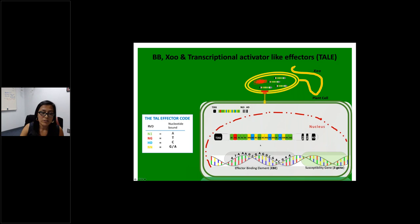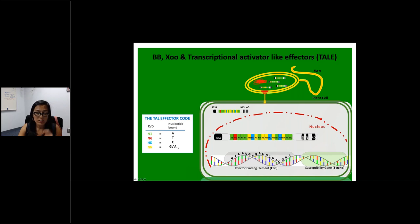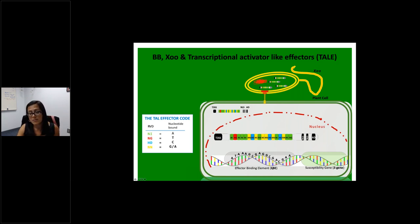Inside the plant cell, TAL effectors use a nuclear localization signal to be shuttled into the nucleus, where they have an activation domain responsible for activating the genes they target. The way they target genes in the host is using the repeat variable diresidues at the center of the TAL effector. Each colored box represents a different repeat of 33 to 34 amino acid long repeats. Positions 12 and 13 of those repeats are considered the repeat variable diresidues, which bind nucleotides on the host genome specifically — NI binds A, NG binds T, HD binds C, and NN binds G or A.